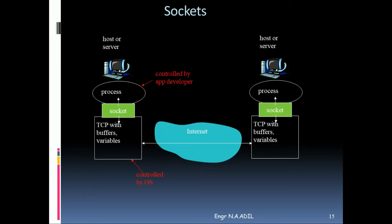Example of sockets: the socket is between the process and TCP with buffer variables, both on host and server sides. The process is controlled by the application developer, and TCP with buffer variables is controlled by the operating system.